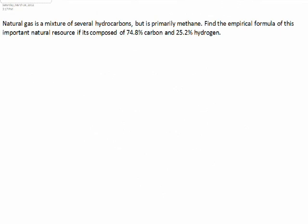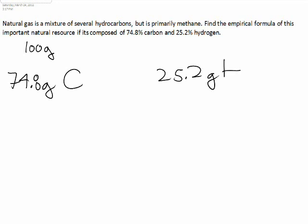If we have natural gas as a mixture of several hydrocarbons but is primarily methane. Find the empirical formula of this important natural resource if it is composed of 74.8% carbon and 25.2% hydrogen. So again now let's make this out of a 100 grams total.